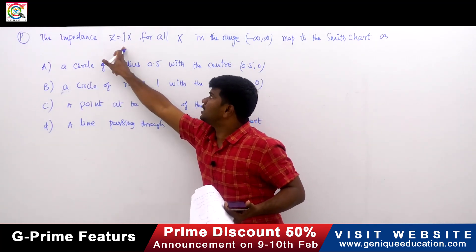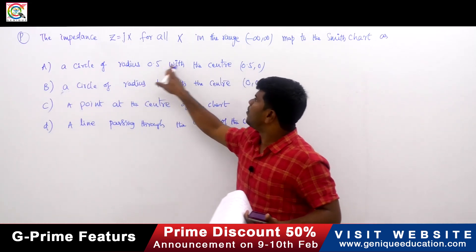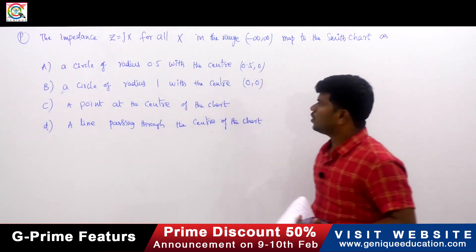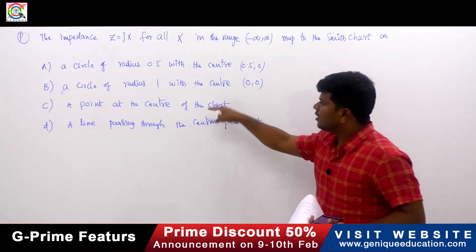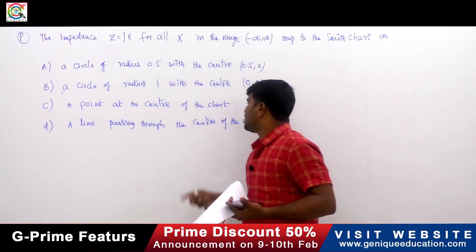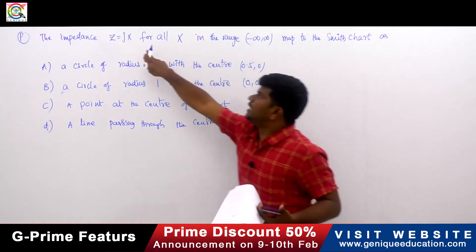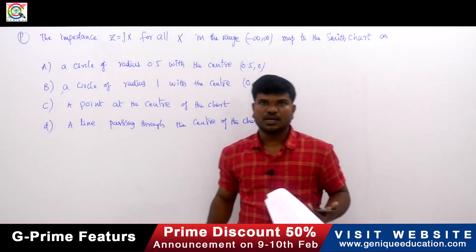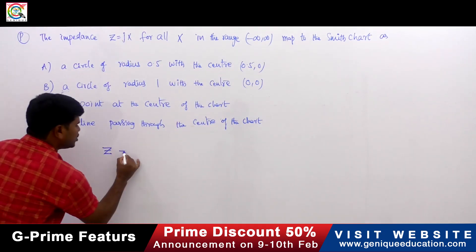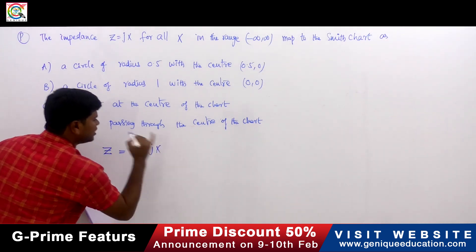Z equals jX will map to the Smith chart as one of four options: a circle of radius 0.5 with center (0.5, 0); a circle of radius 1 with center (0, 0); or a point at the center of the Smith chart. He is asking which is suitable for Z equals jX. The normalized impedance can be represented as R plus jX.